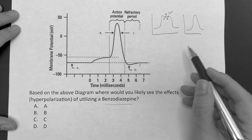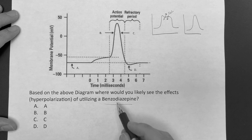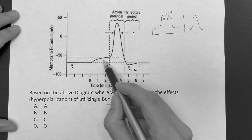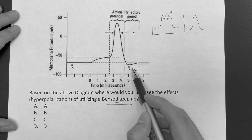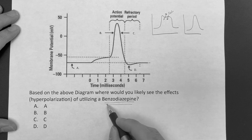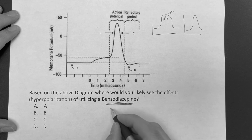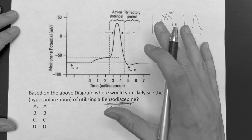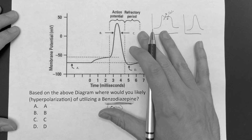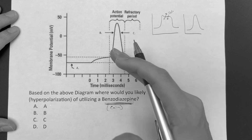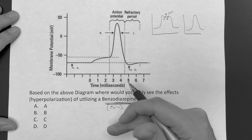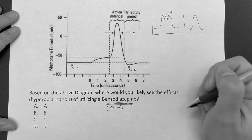The real question is: where does the influence of a benzodiazepine happen during this action potential? Because what's the purpose of the benzodiazepine? Essentially, it's to calm things down. Like if you have a seizure, there's too much activity in the brain — too much firing. So I have to calm things down and make sure it doesn't reach that threshold to fire again.